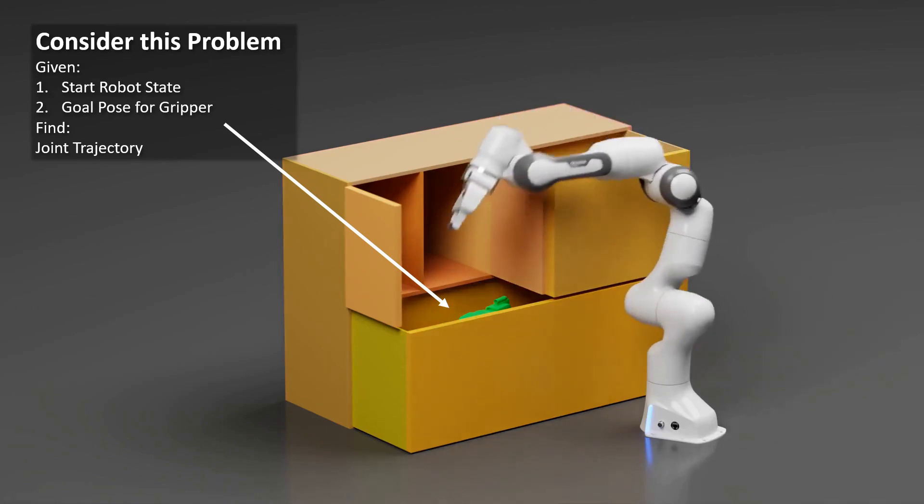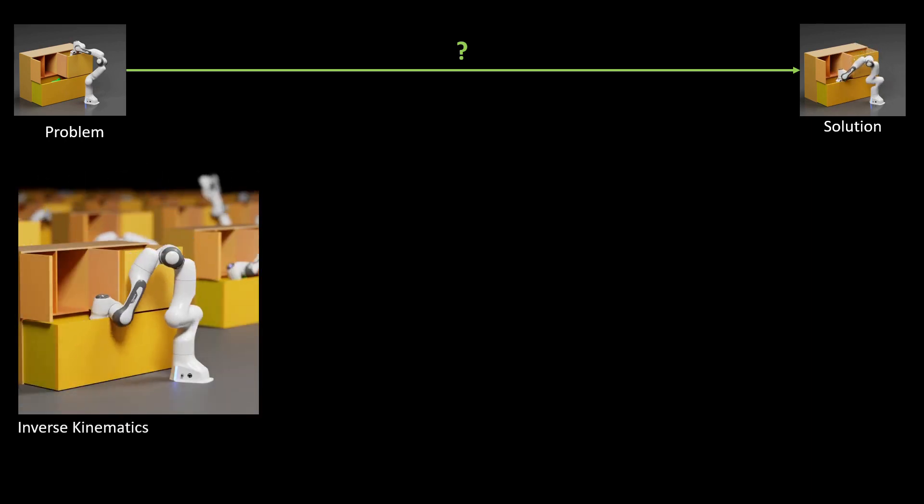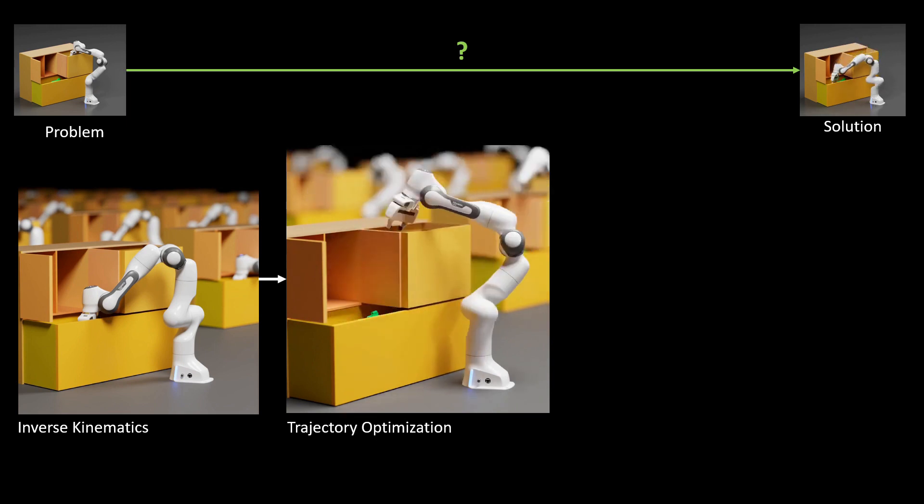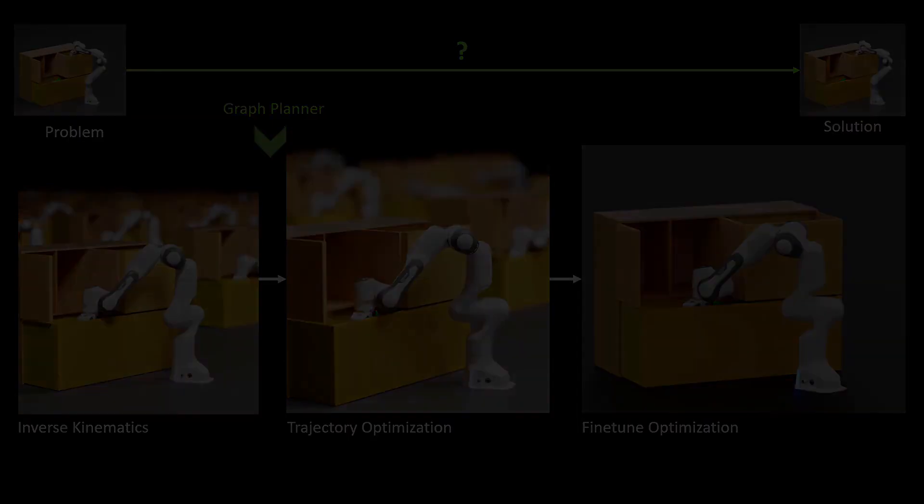How does Kurobo work? Let's look at an example problem to explain Kurobo's approach. Kurobo first performs inverse kinematics to find goal configurations that map to the goal pose. Then trajectory optimization is performed with seeds generated by linear interpolation from the start state to IK solved goal configurations. After trajectory optimization, we run a fine tuning optimization step to minimize jerk. Kurobo also implements a graph planner on the GPU that can be leveraged to seed trajectory optimization in extreme cases.